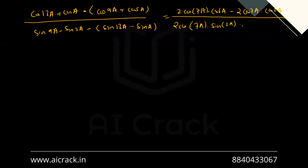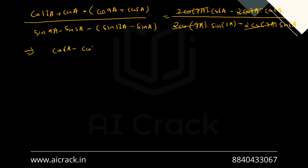We can see that 2 cos 7a is common in all terms — numerator and denominator — so we can cancel it out. Our expression then becomes cos 6a minus cos 2a divided by sin 2a minus sin 6a.